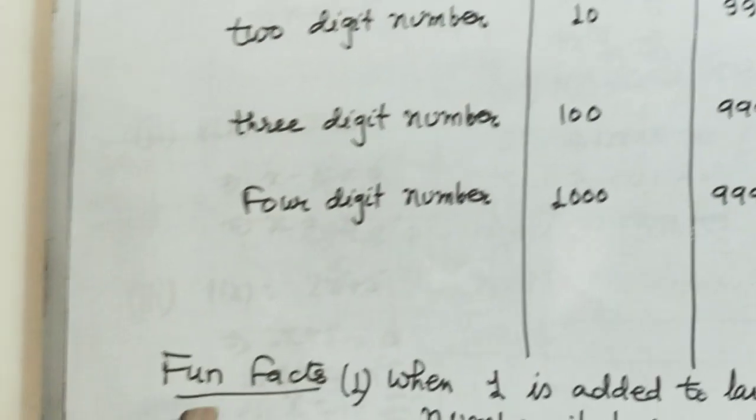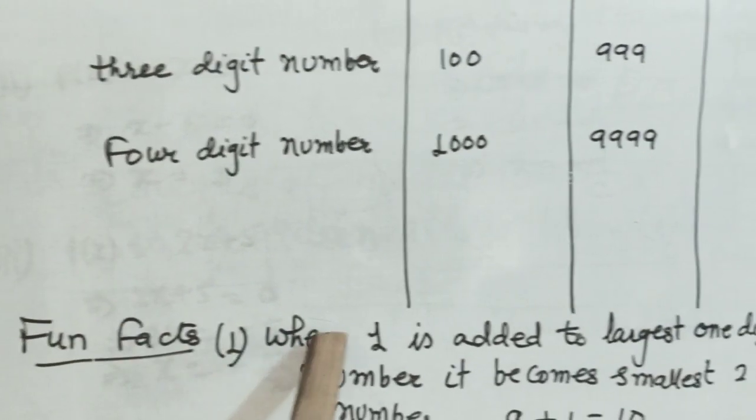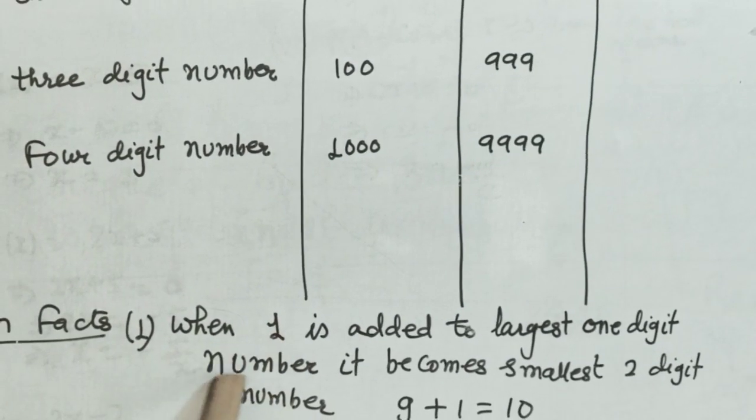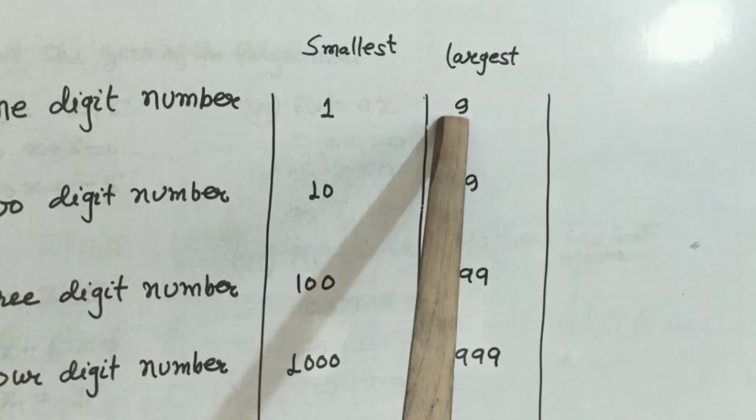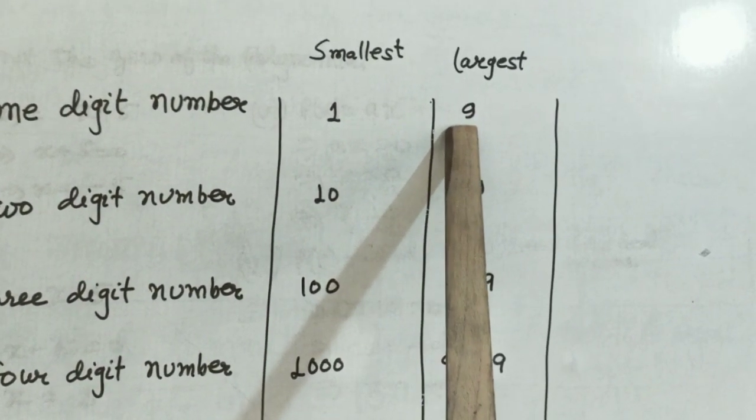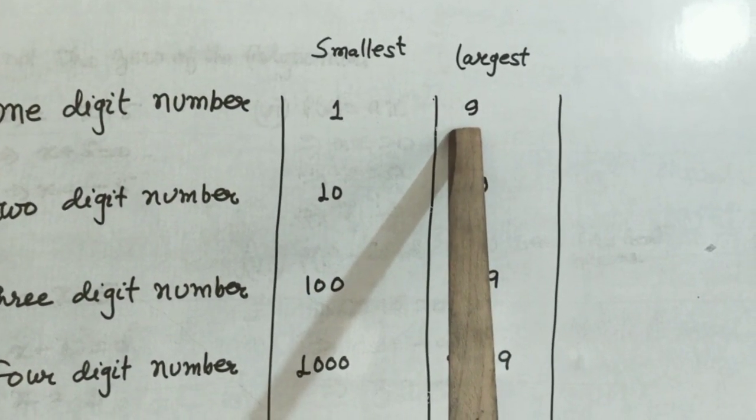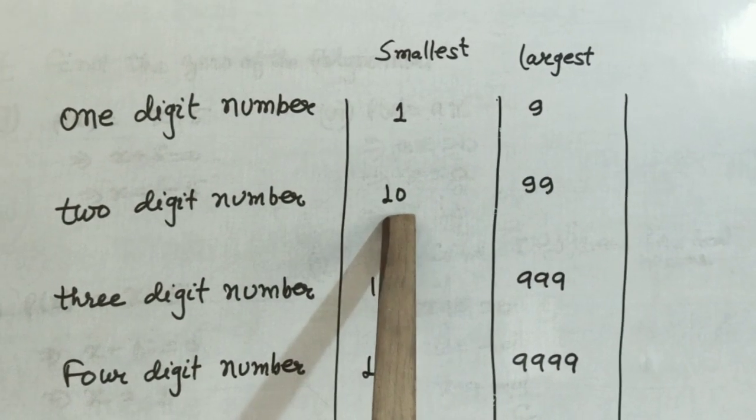Well, let us look at some fun facts. When 1 is added to the largest 1 digit number, it becomes the smallest 2 digit number. What is the largest 1 digit number? 9. And if you add 1 to 9, it becomes 10. And 10 is the smallest 2 digit number.